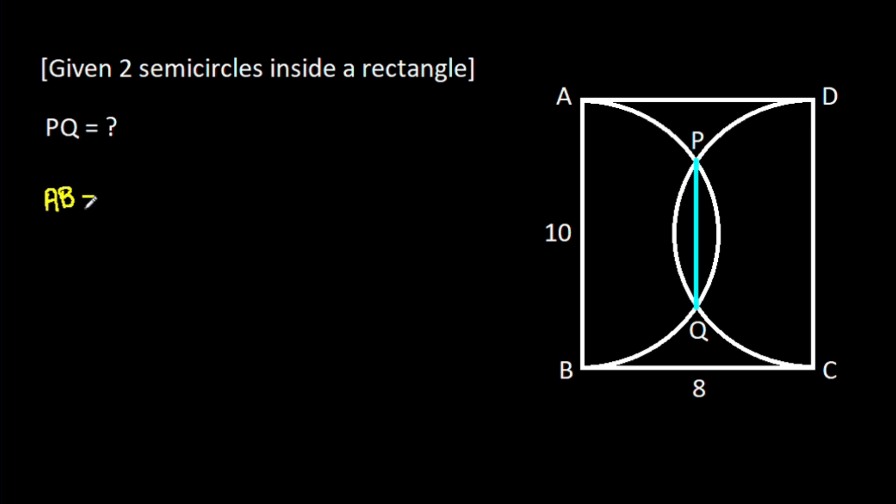We have AB is 10. Suppose the center of this semicircle is O, then AO will be equal to BO, that will be radius, and it will be AB over 2, which is 10 over 2, that will be 5. So AO is 5, BO is 5.